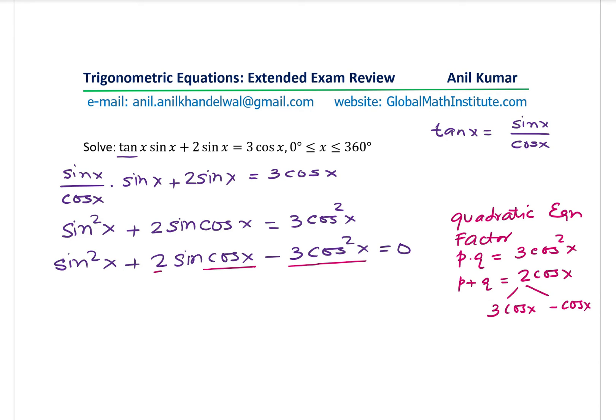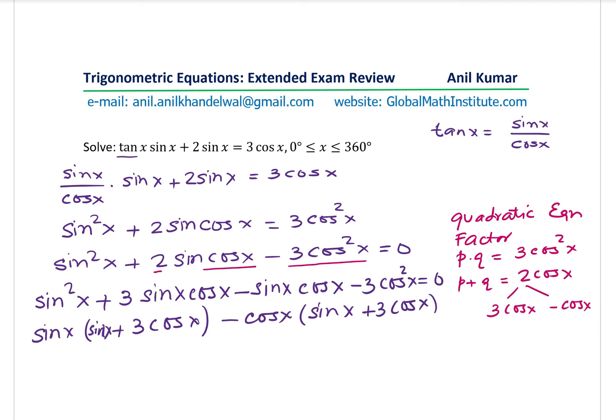So that is how we are going to factor this. So we can write this as sin square x plus 3 sin x cos x minus sin x cos x minus 3 cos square x equals to 0. Now, from the first two terms, we will take sin x common and we get sin x plus 3 cos x. And the second two terms, we will take cos x common. We get sin x plus 3 cos x. We have to get the same terms common, otherwise you cannot factor.